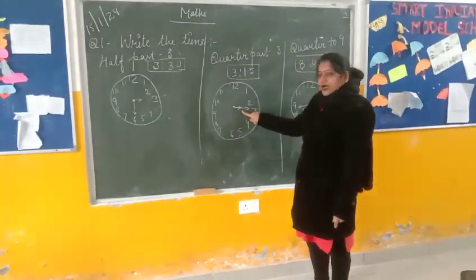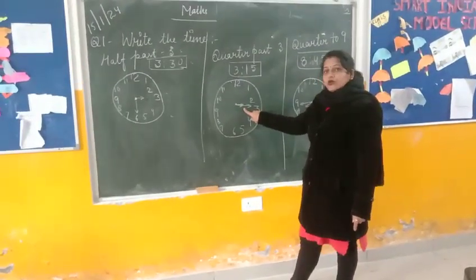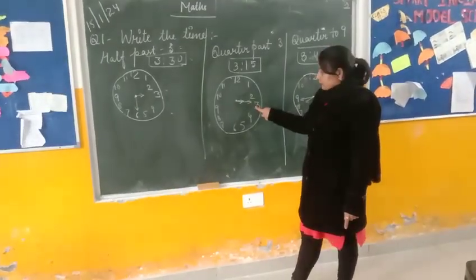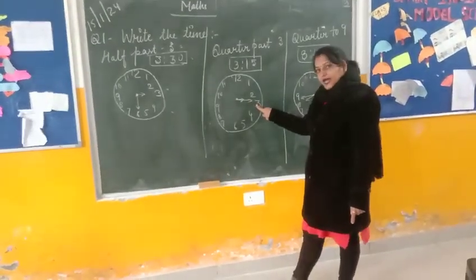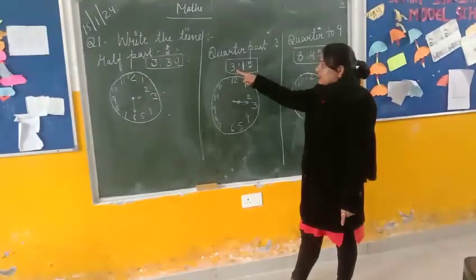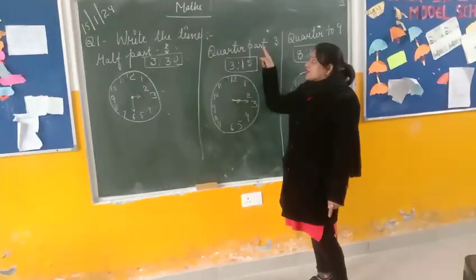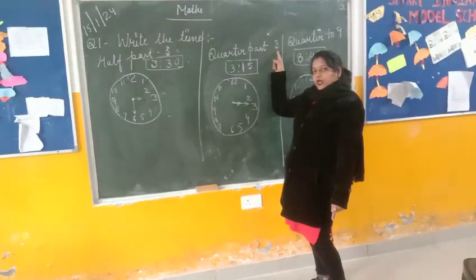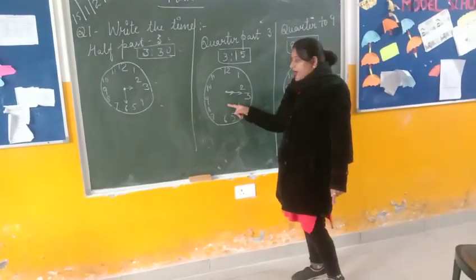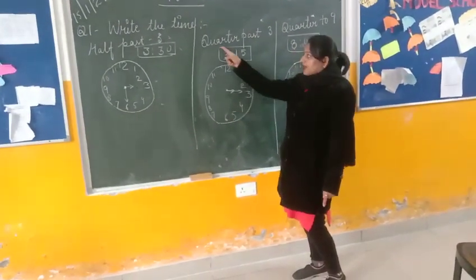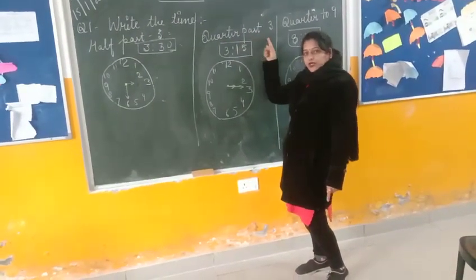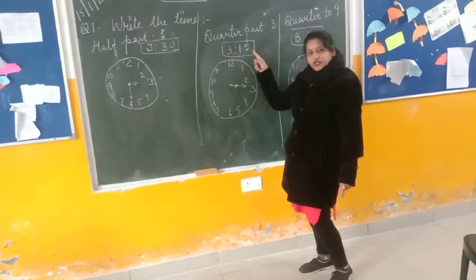Here the time is 3:30, so firstly you will draw the short hand on your 3, and the long hand shows 3:30. It will show quarter past 3. You will draw this watch on your copy, draw the hands, and write the time — quarter past 3.